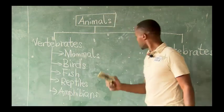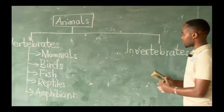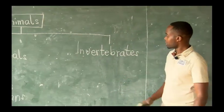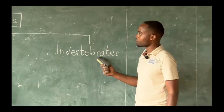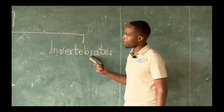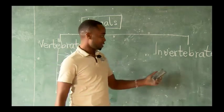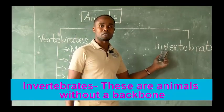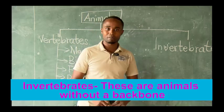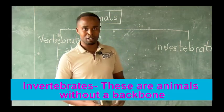The other group of animals is invertebrates, as you can see here on the chalkboard. They are known as invertebrates — this is the second group of animals. So invertebrates are animals without a backbone. Animals without a backbone are known as invertebrates.